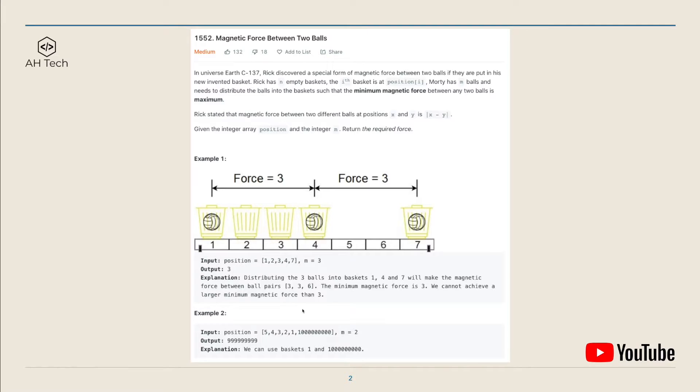For example 2, we only need to distribute two balls on the array. It's obvious that we can just put the ball on the smallest and the largest element.